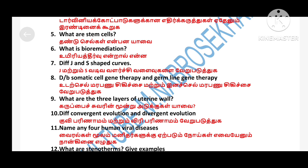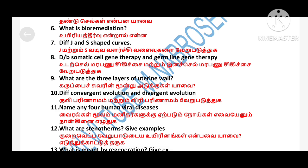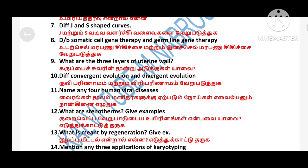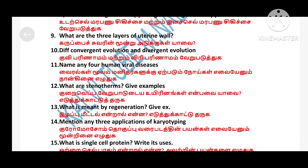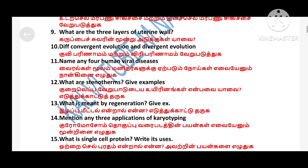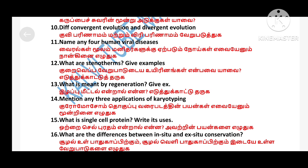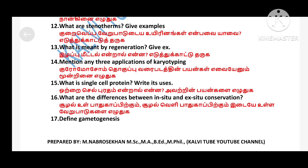Difference between somatic cell gene therapy and germ line gene therapy. What are the three layers of the uterine wall? Difference between convergent evolution and divergent evolution. Name any four human viral diseases. What are stenotherms? What is meant by regeneration? What is single cell protein?